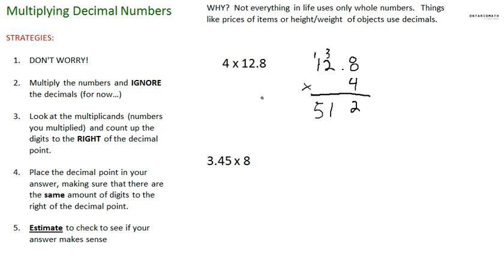So we're just gonna have to figure out and place a decimal in here. Where are we gonna put it? Well, let's look at step three: look at the multiplicands, the numbers you multiplied. Here it is, 12.8. Count up the digits to the right of the decimal point. How many digits are to the right of it? Well, only one. So we're gonna place a decimal point in our answer.